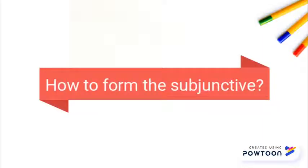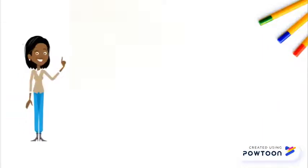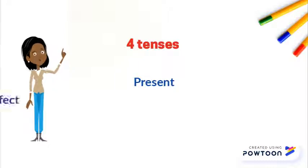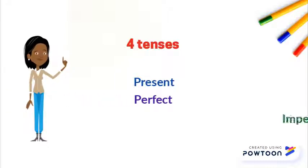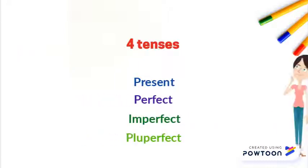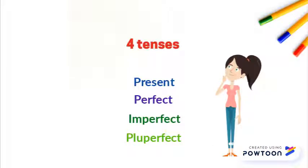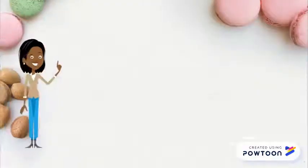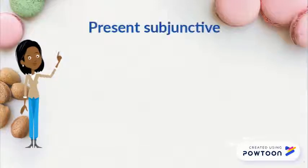How to form the subjunctive? The subjunctive exists at four tenses: the present, the perfect, the imperfect, and the pluperfect. The last two tend to disappear nowadays, so do not worry too much about them. Let's start with the most common one, the present subjunctive.